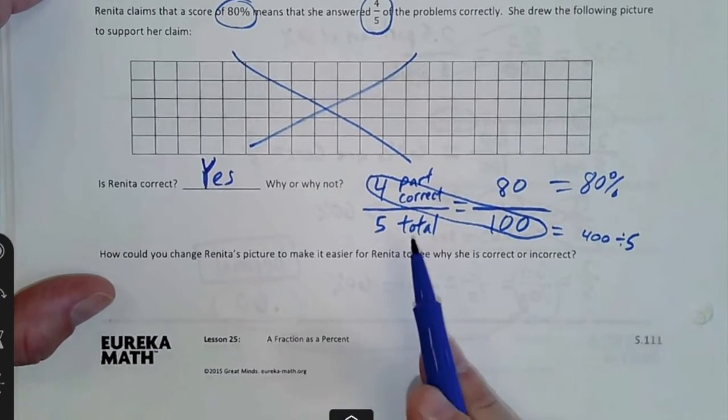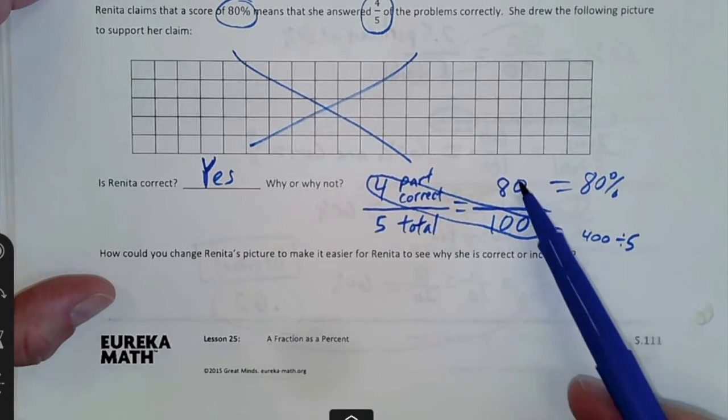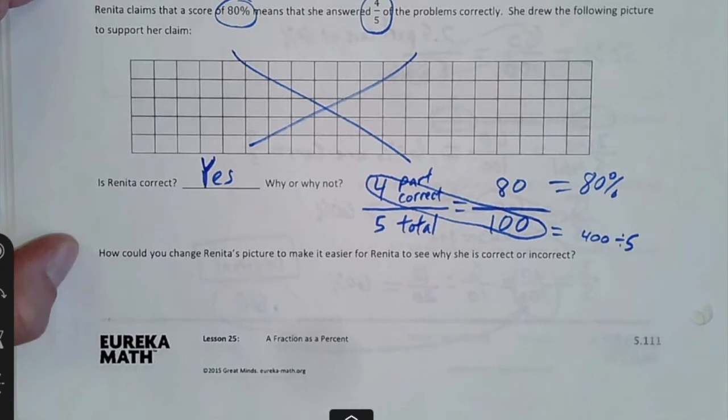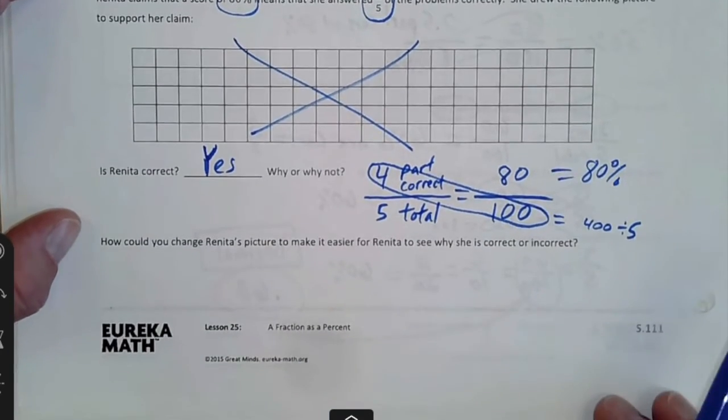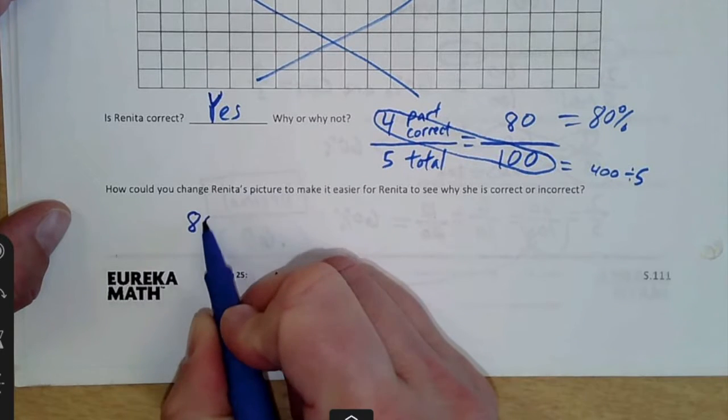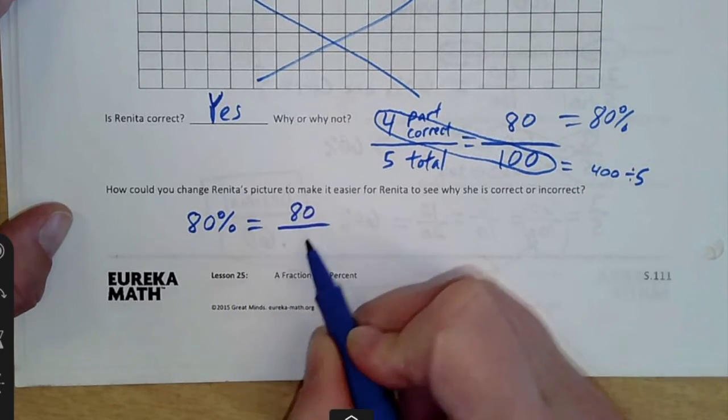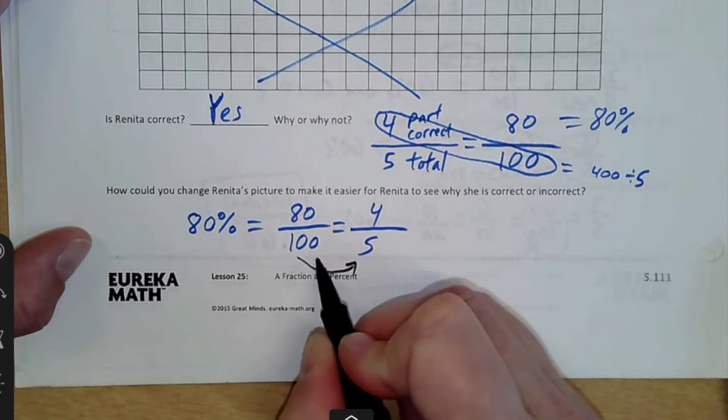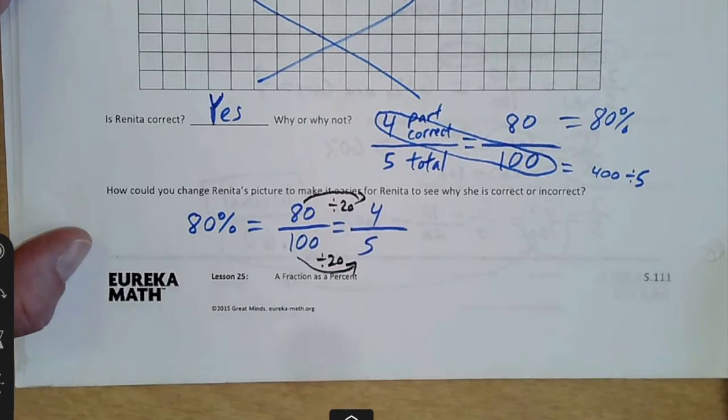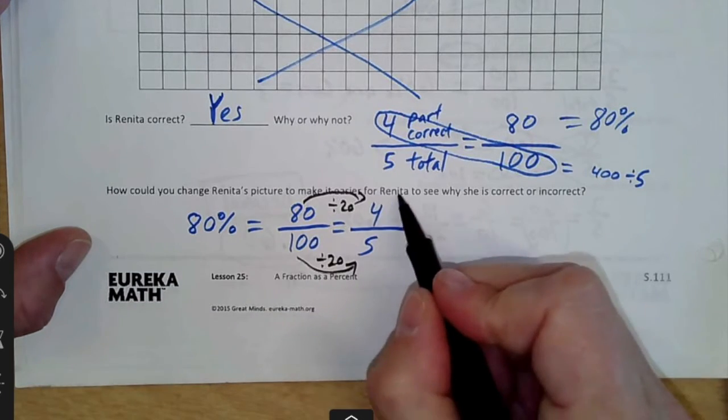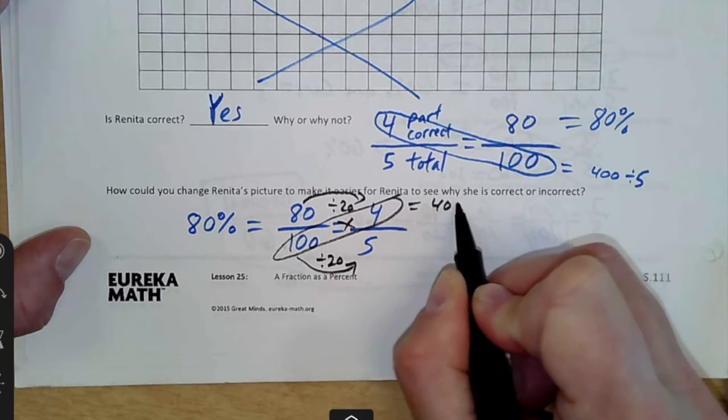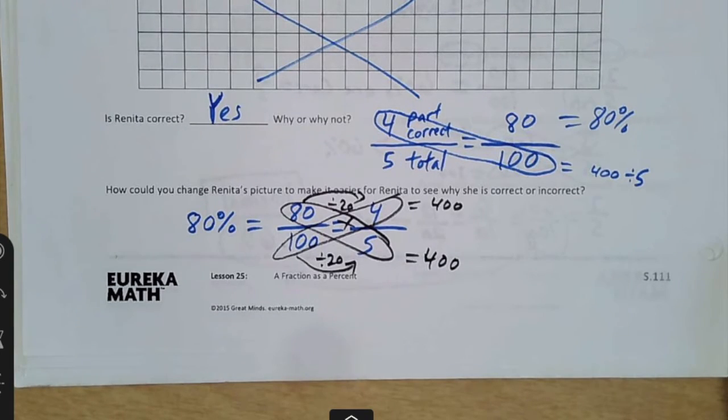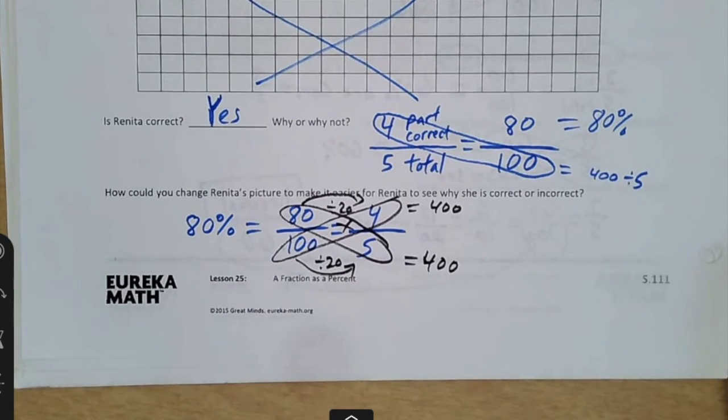How did we model that? We modeled it with cross-products. So we took four to five is the same thing as 80 out of 100, it's just a bigger ratio. Why did we choose 100? Because it was a percent, and any percent we have is out of 100. How could you change her picture to make it easier for her to see why she is correct or incorrect? You could flip that around. If you started with 80%, we know that as a fraction that would be 80 out of 100. Does that simplify down to four to five? And some people see, yeah, you could divide them by 20, and it simplifies down. Others say, well, are those the same thing if I do cross-products? Is 100 times four, that's 400, is 80 times five, also 400? There's another way to show that those two are the exact same number. 80% is the same thing as 80 out of 100, which is the same thing as four out of five if you simplify it down.